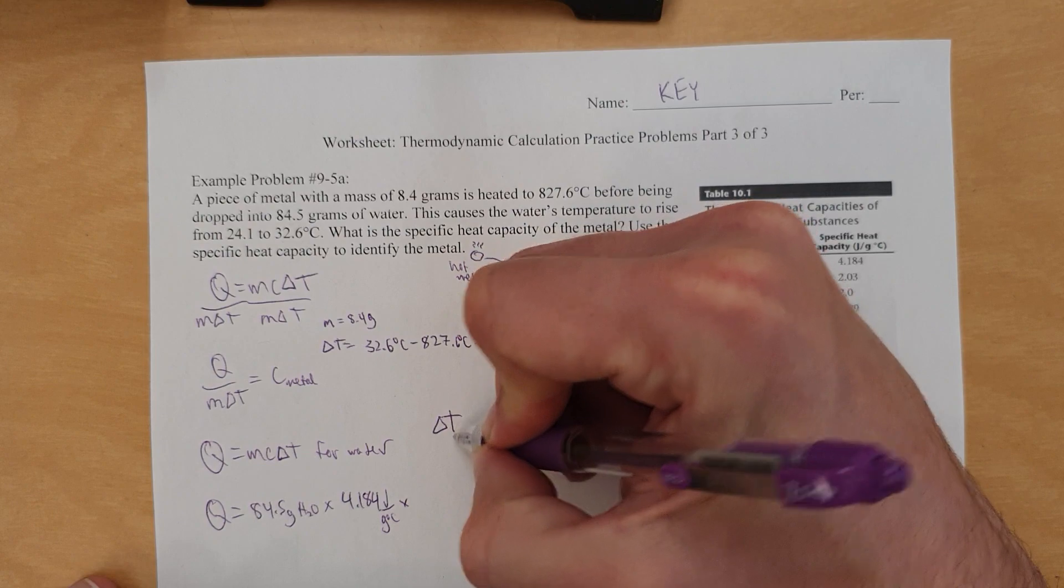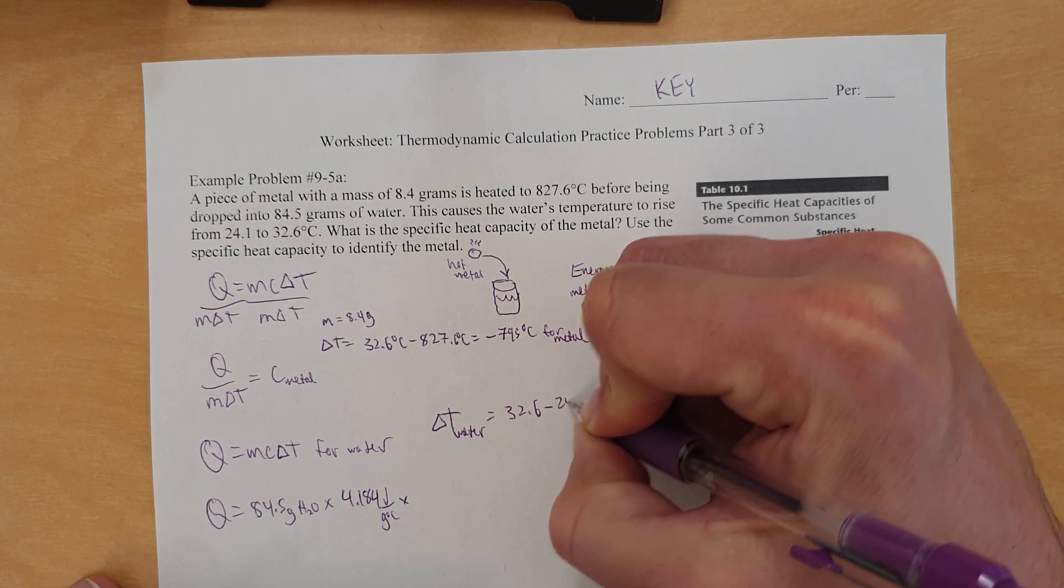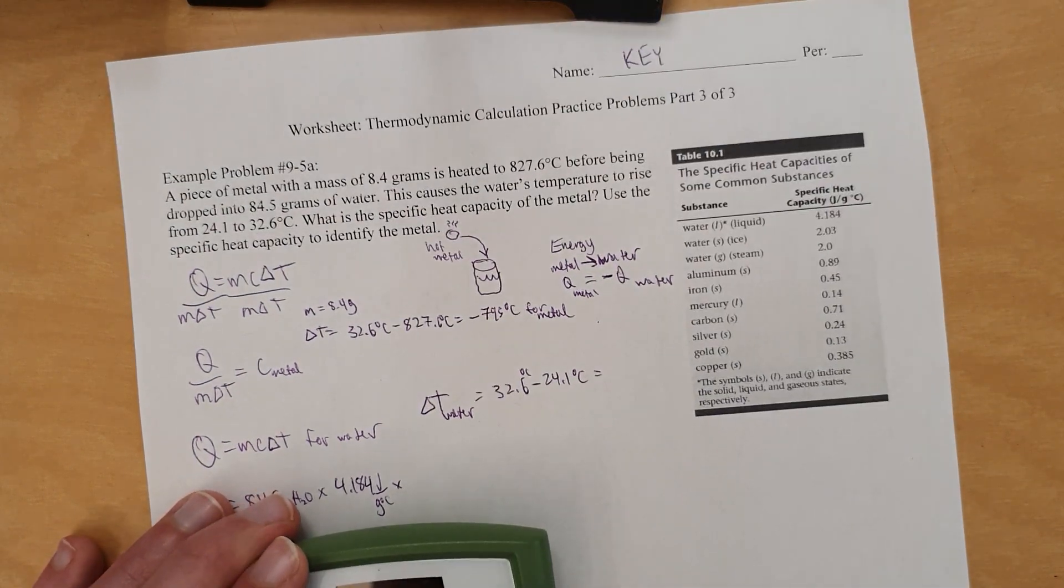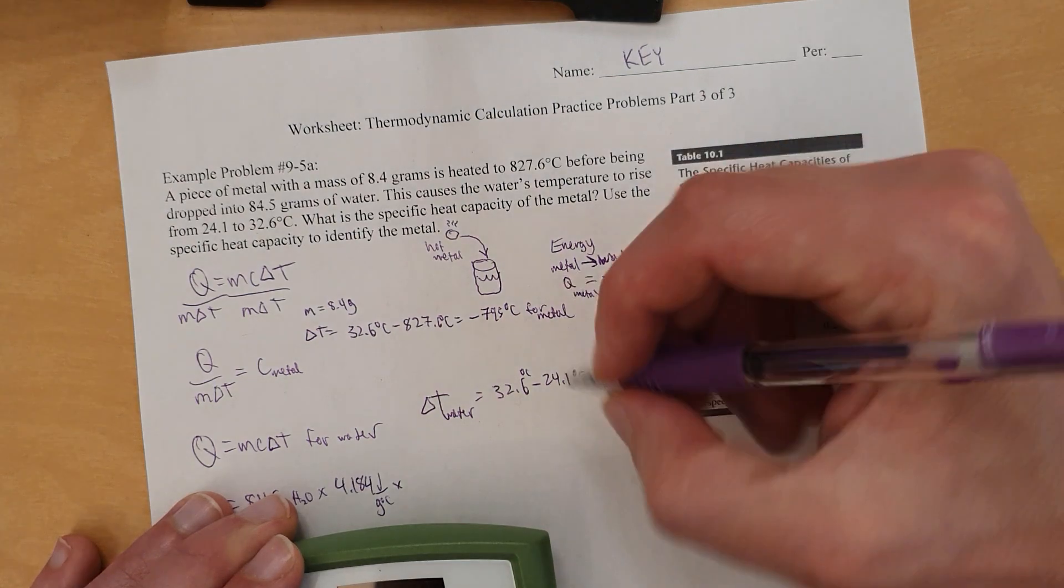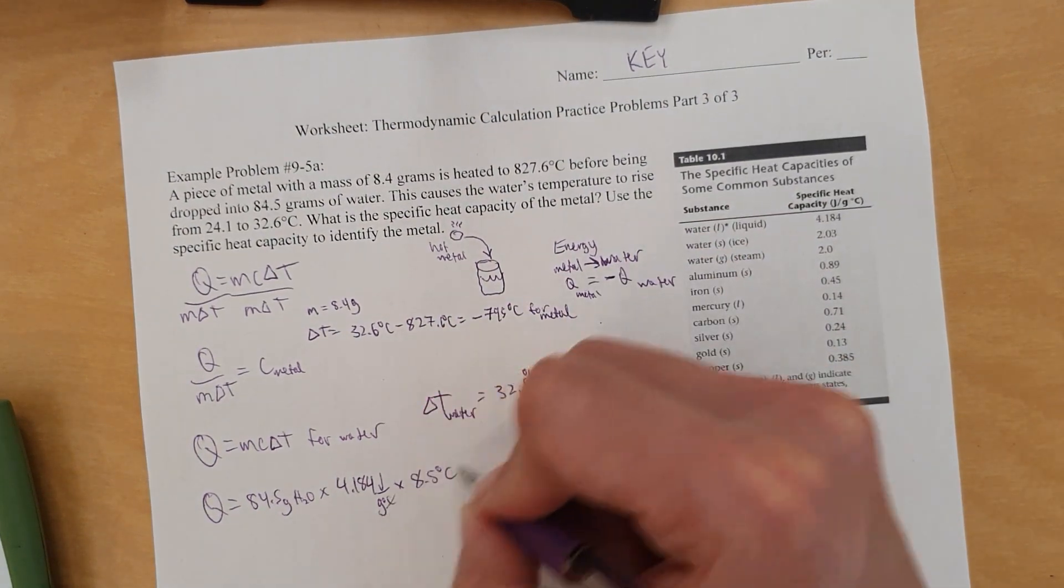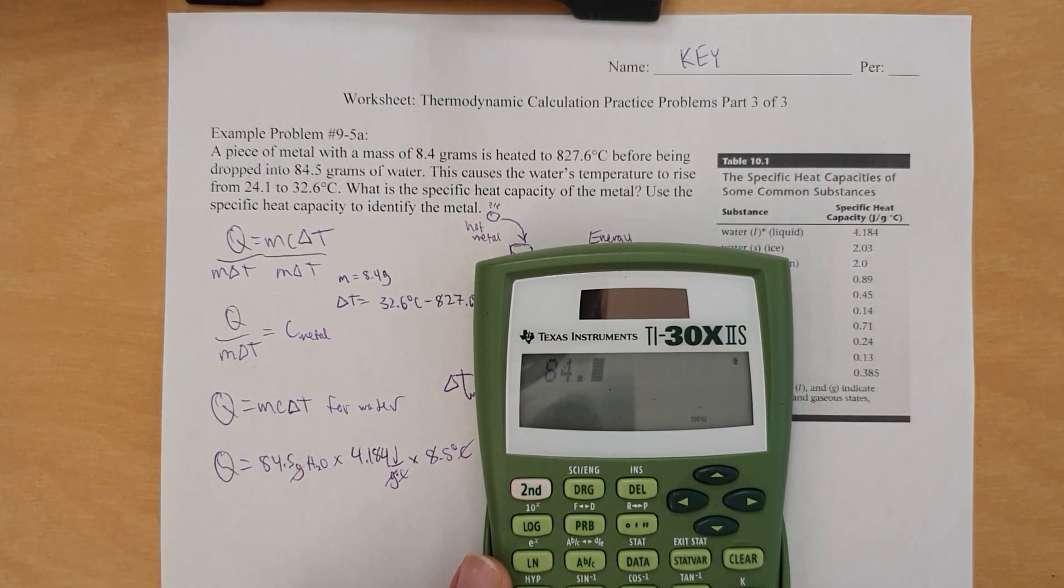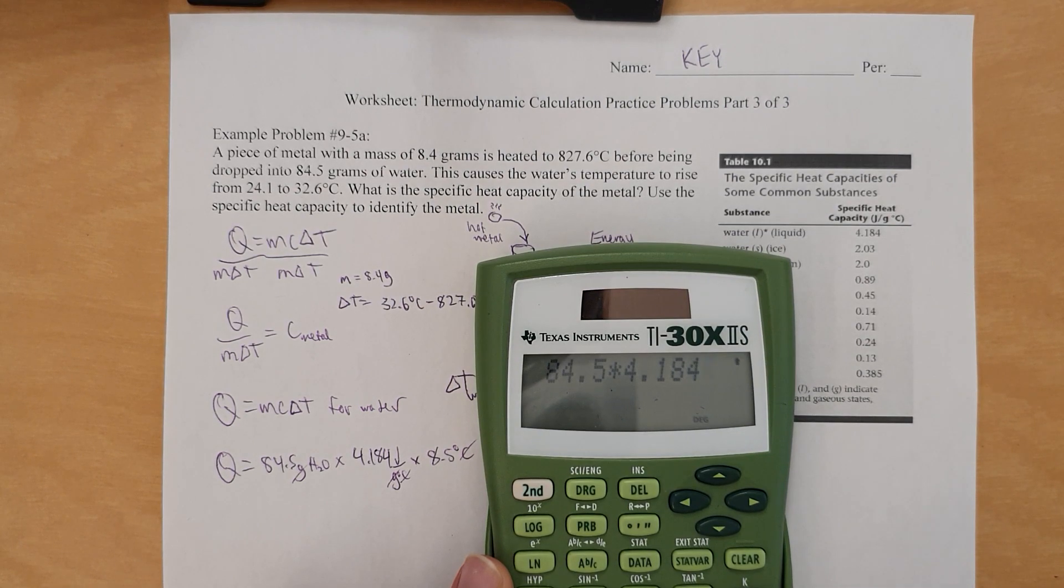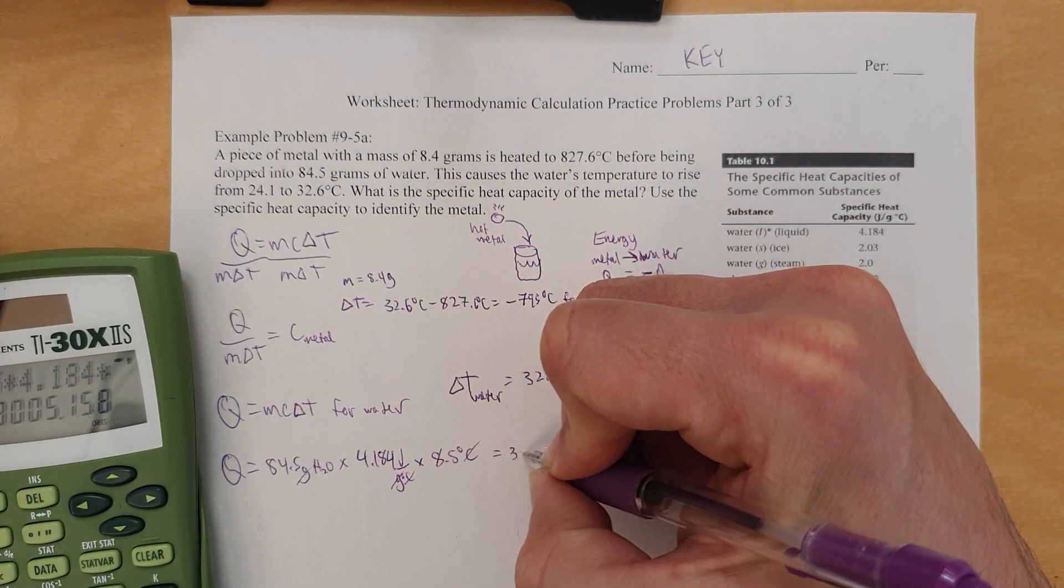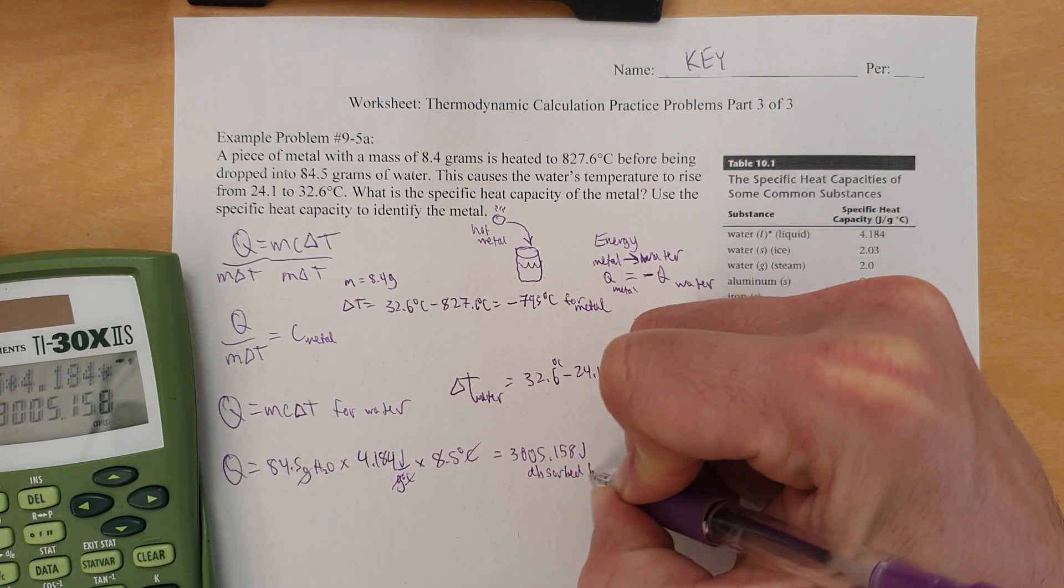So let's use the liquid specific heat capacity of 4.184 joule per gram degree Celsius for liquid water. And the delta T for the water, so delta T water is, the water got warmer, so we'll take the bigger minus the smaller, 32.6 minus 24.1, degrees Celsius, and that will allow a positive delta T, which you need for when water warms up. 32.6 minus 24.1 equals 8.5 degrees Celsius, and it's a positive number, so times 8.5 degrees Celsius. Degrees Celsius cancel degrees Celsius, gram cancel gram, joule is the answer. Let's see what that comes out to. 84.5 times 4.184 times 8.5 equals that many joules. 3,005.158 joule absorbed by water.